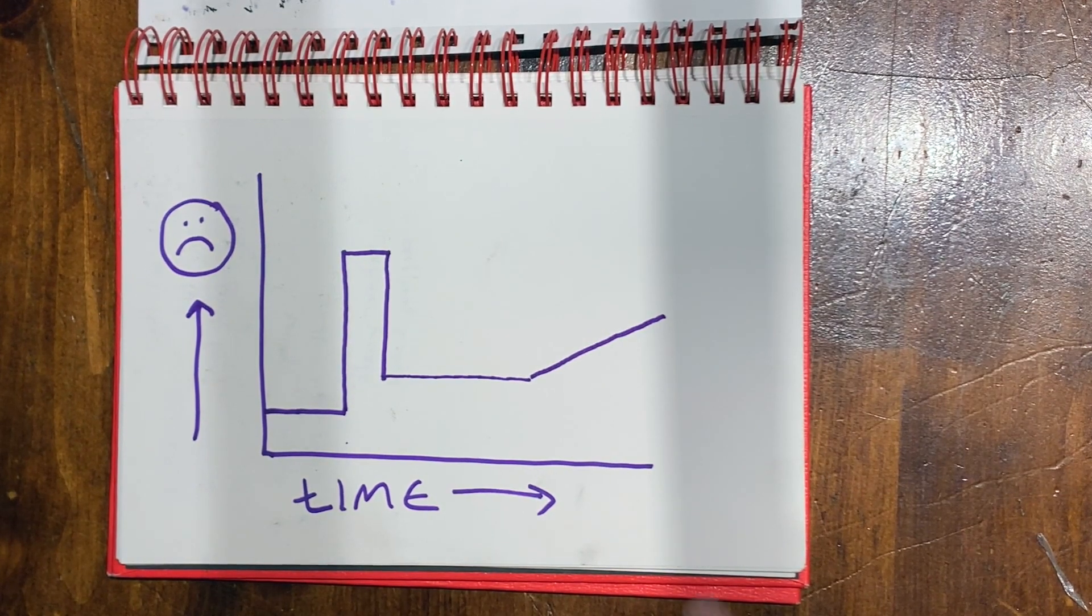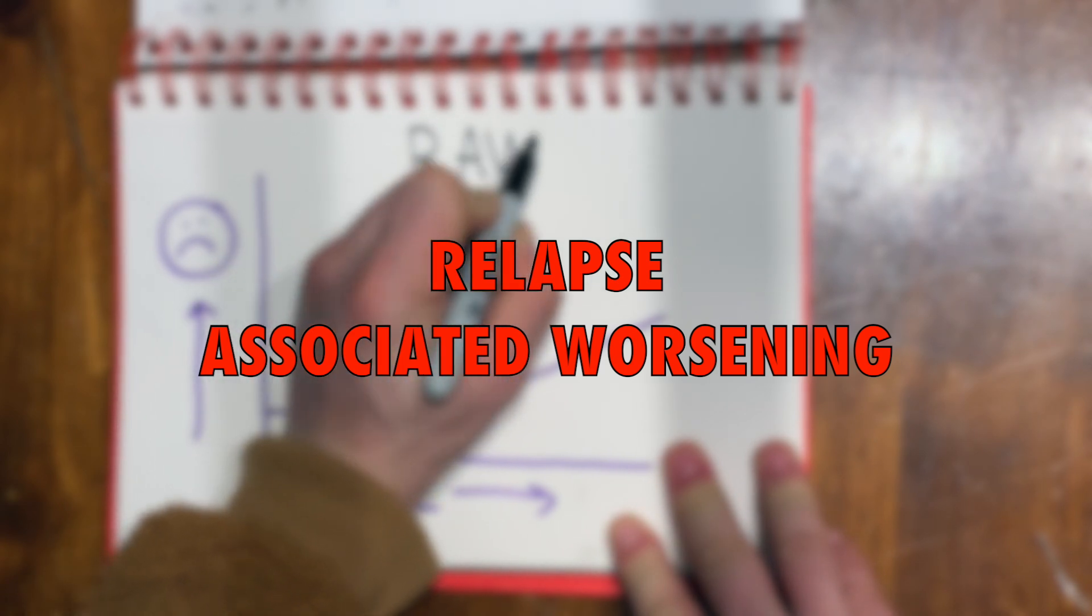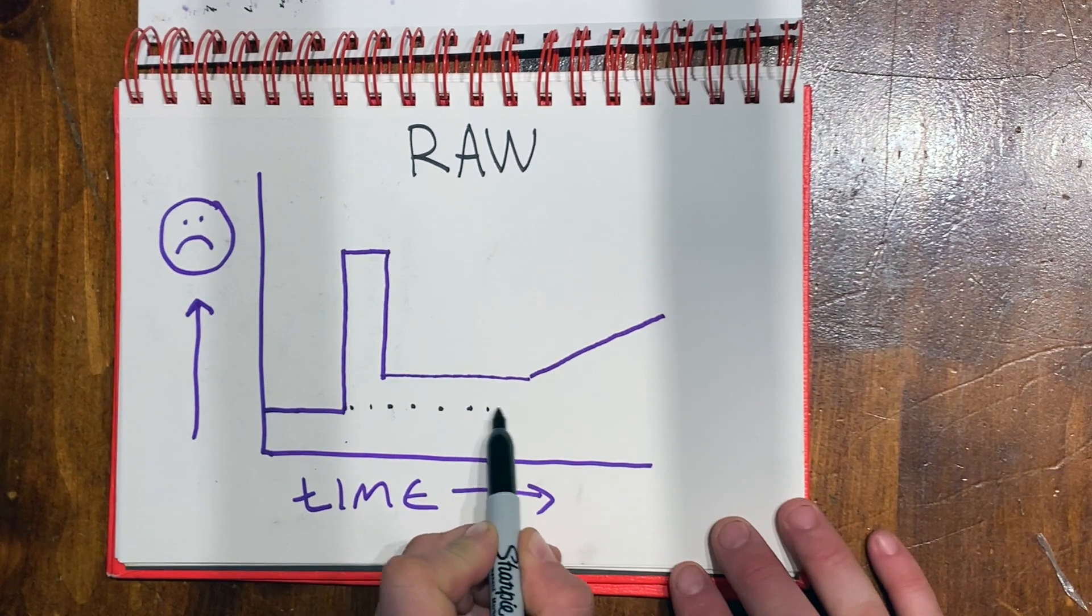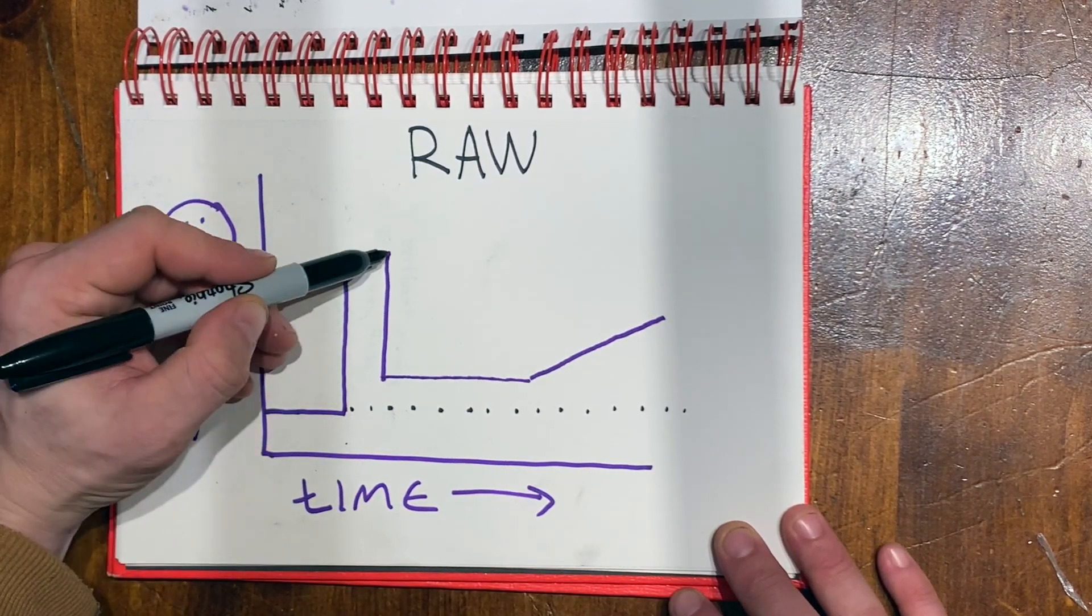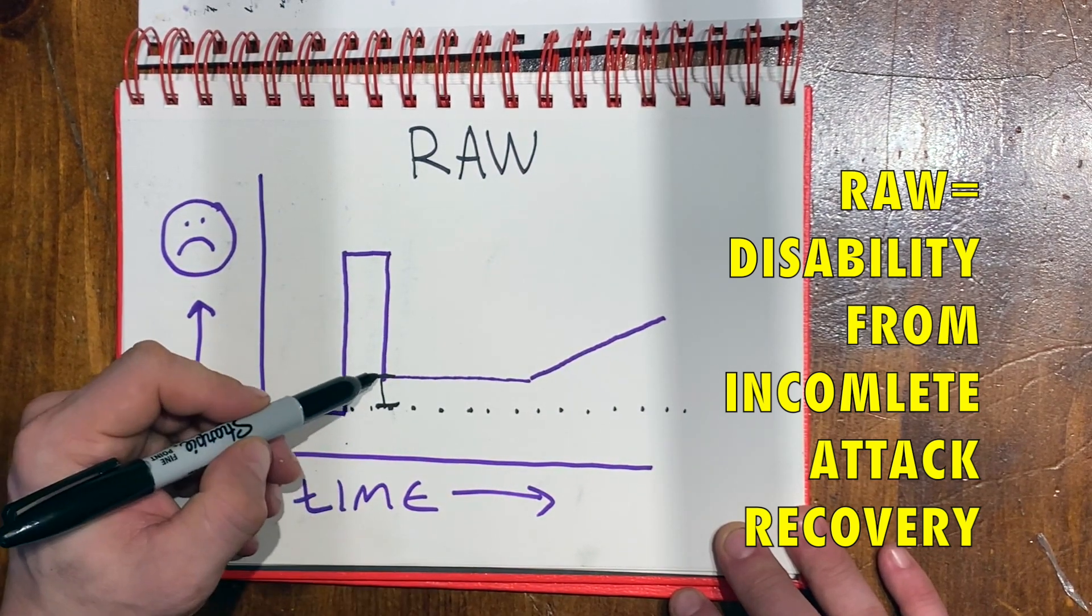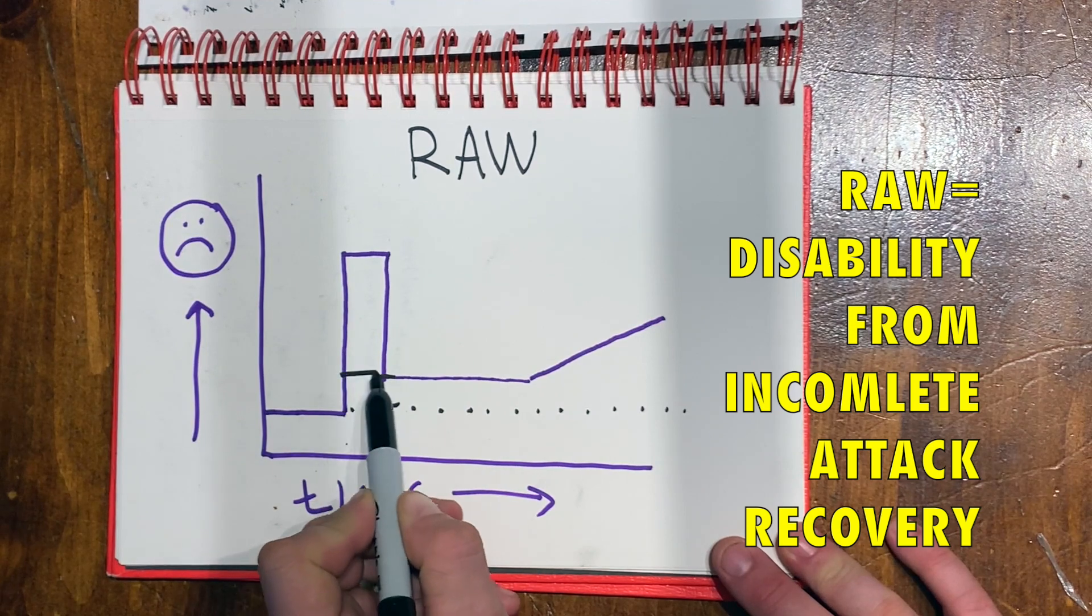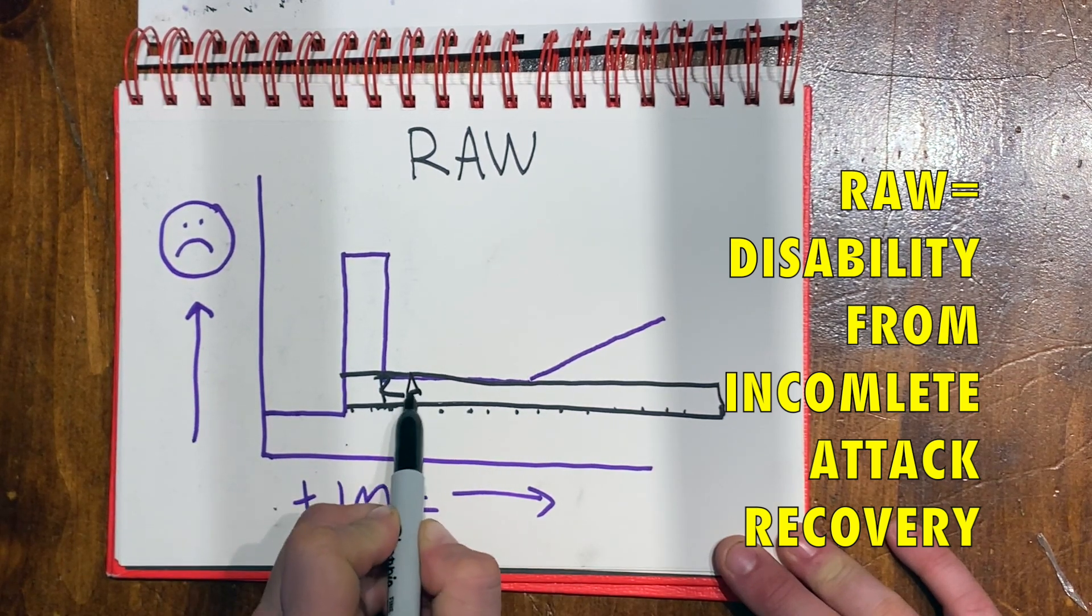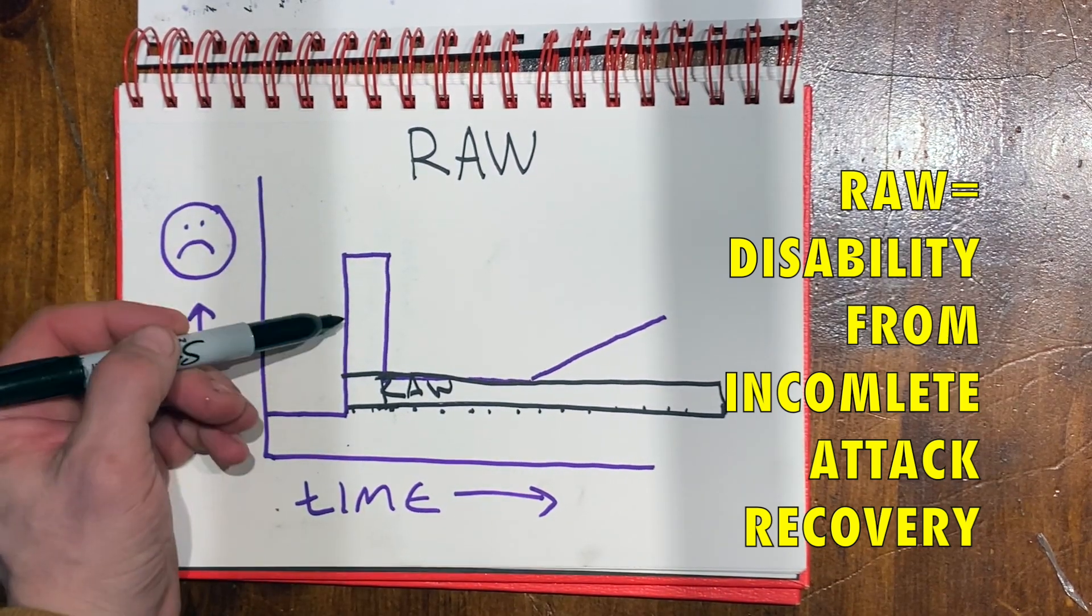And I'm going to introduce to you two concepts. The first one is relapse associated worsening. So if you look here at the graph, this was the person's baseline. Before we started moving forward in time, this is where their level of disability was. And when they had an attack, they didn't fully recover. So this distance from here to here is incomplete recovery from an attack. They had an attack and didn't get all the way better. If you think about it, this entire section is relapse associated worsening. This is the accumulation of disability that they acquired because they didn't get better from their attack.